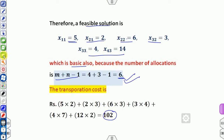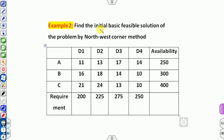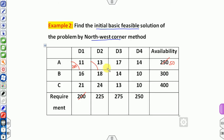Let's look at a second example — find the initial basic feasible solution by the northwest corner method. Starting from the northwest corner: A has availability 250 but D1 has requirement 200, so allocate the minimum of 250 and 200, which is 200. The remaining supply for A is 50. Now move to the next cell: A has 50 units left and D2 has 225 units demanded.